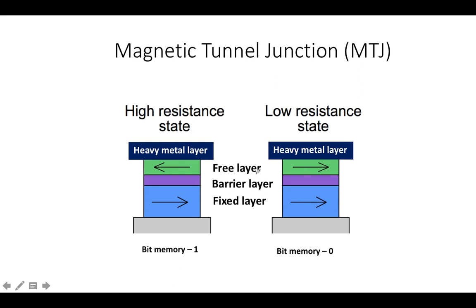In the free layer, the direction of magnetization can be changed — how we can change it will be covered later. When the direction of magnetization in the top and bottom layers are different, the electron passing through will face a higher resistance. When the magnetization direction is similar, the electron faces very low resistance. The heavy metal layer on the top is used to switch the magnetization direction of the free layer.